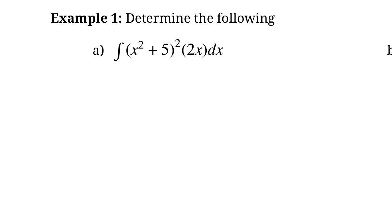Do you see a pattern though? Do you see any other way we could possibly find the integral? Remember, integration is just the opposite of differentiation. So if we're trying to anti-differentiate this, can we come up with a function that's going to give us this as the derivative? You may notice that if I take the part inside the brackets and call that u, this piece over here — the 2x piece — is u prime. It's the derivative of u.